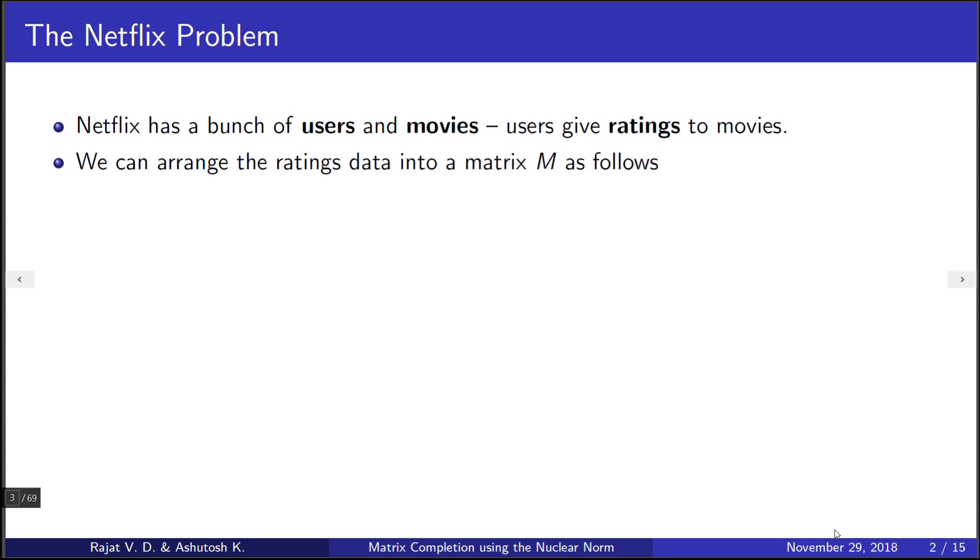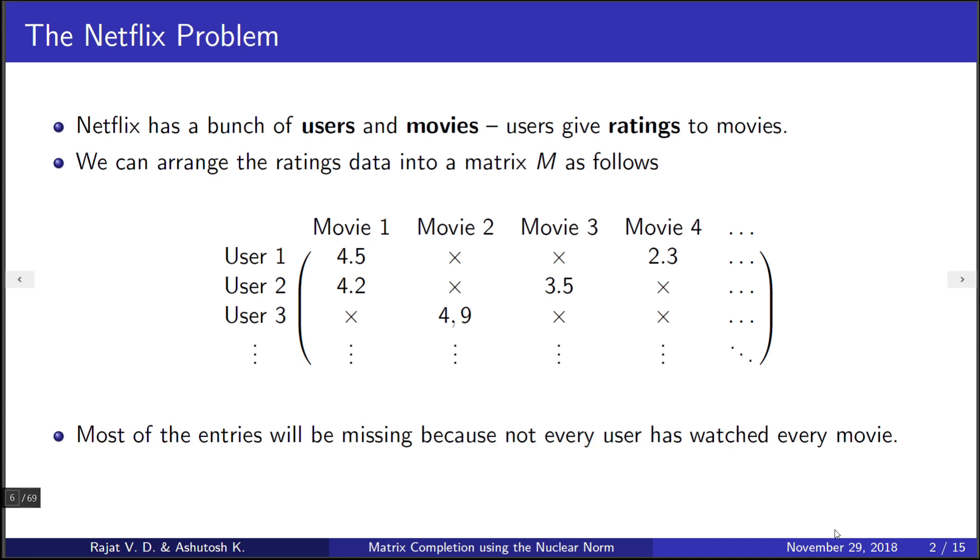Now we can arrange the data which we already have into a matrix M as follows, with the ijth entry being the rating user i would give to movie j. Most of the entries in this matrix will be missing because a user wouldn't have watched every movie. But the claim is: M must have a low rank.